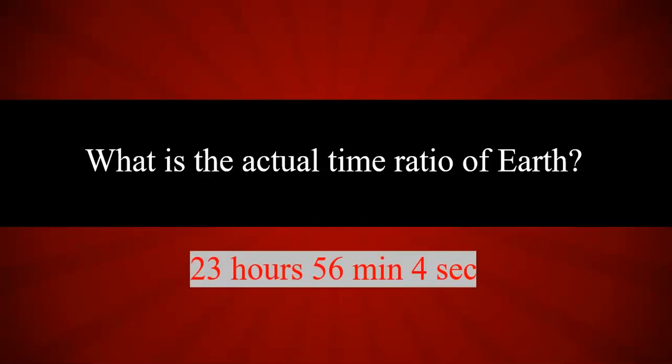What is the actual time ratio of earth? 23 hours, 56 minutes, and 4 seconds.